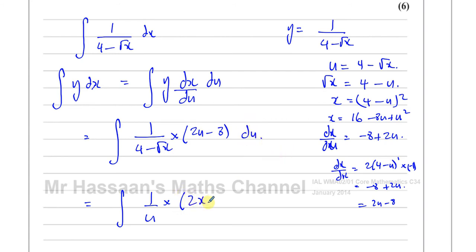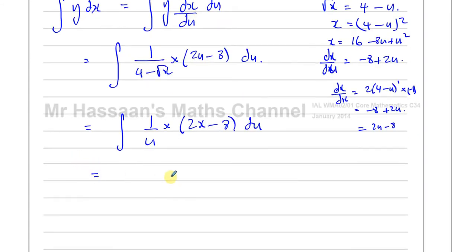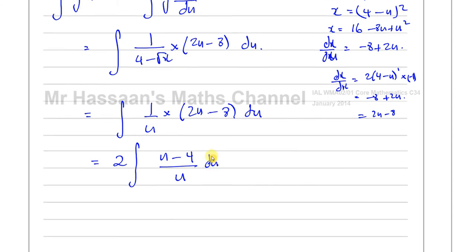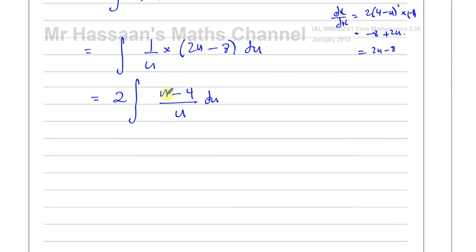So I can replace dx/du with 2u minus 8, giving the integral of (1/u) times (2u minus 8) du. Now I can try to simplify this. I can take 2 outside, and I always like to take common factors out — it's no problem if you leave it inside.